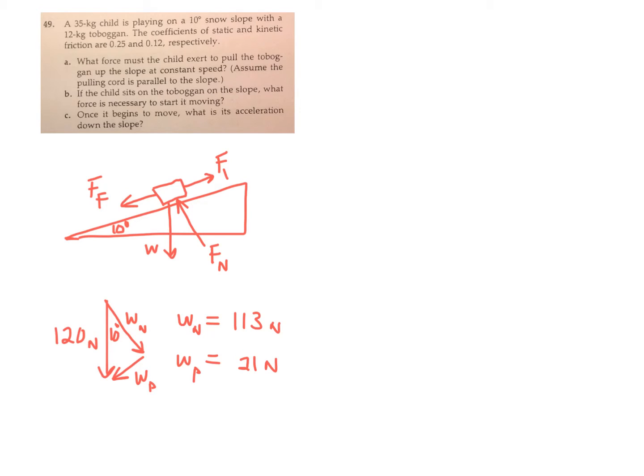Here's the basic diagram with the ramp or the hill at 10 degrees. There are four forces acting on the sled. We're looking at the sled right now or the toboggan in Part A here only, not the child yet.